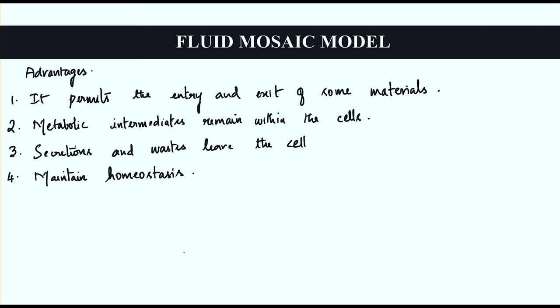The fifth advantage is that it performs physical activities like diffusion and osmosis. We are going to see these in detail in further slides. This is all about the advantages of the selectively permeable membrane or plasma membrane.